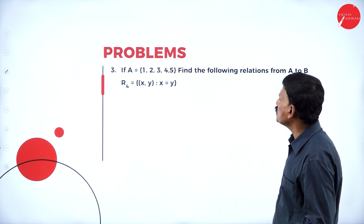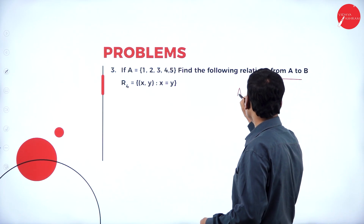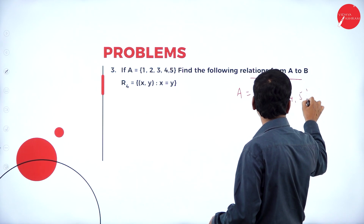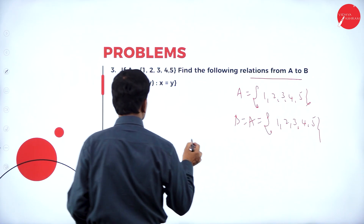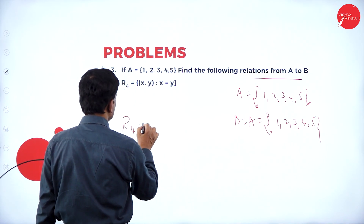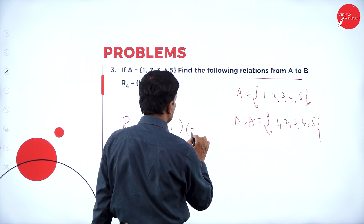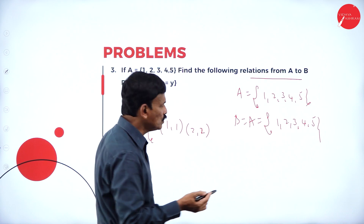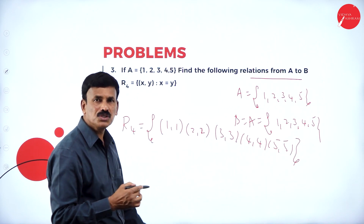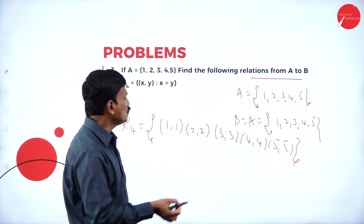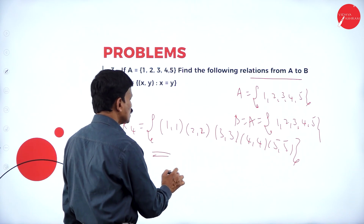Next, if A = {1, 2, 3, 4} with B = A, find the relation R = {(x, y) such that x = y}. The relation means 1 = 1, 2 = 2, 3 = 3, 4 = 4, 5 = 5. So R = {(1,1), (2,2), (3,3), (4,4), (5,5)}. This is an example for a reflexive relation.